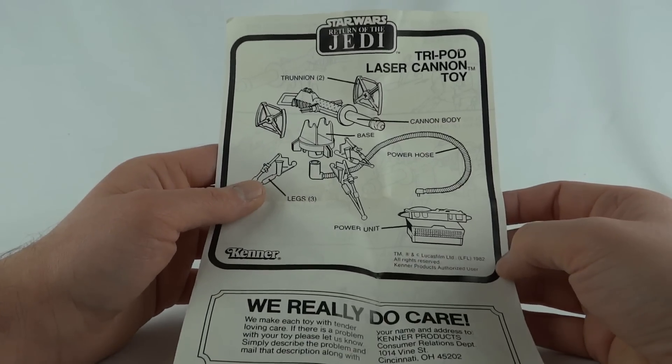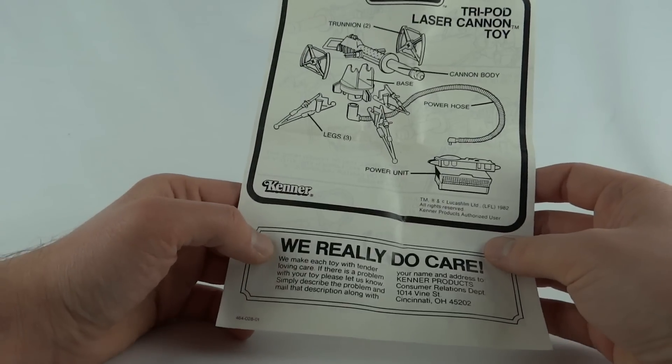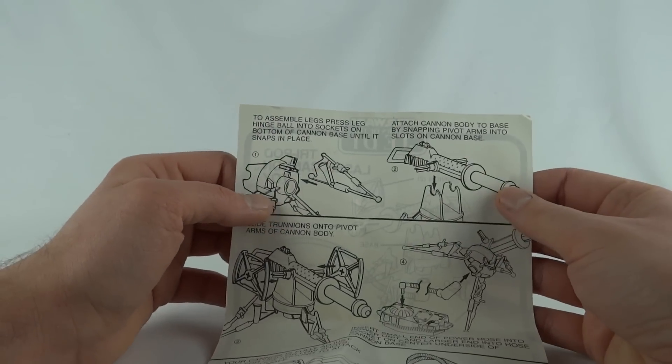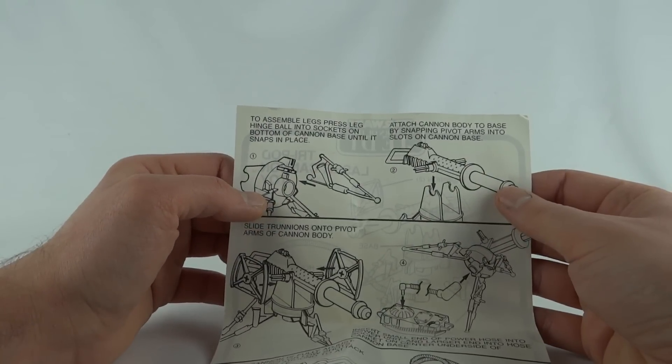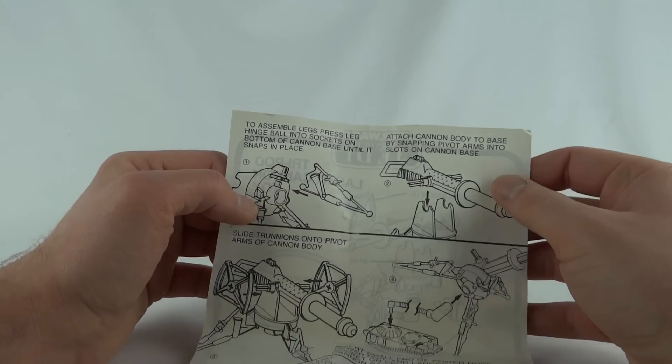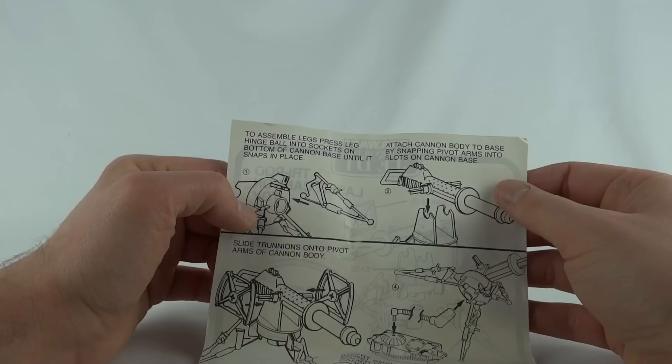On the back, to assemble legs, press leg hinge ball into socket on bottom of cannon base until it snaps into place. Attach cannon body to base by snapping pivot arms into slots on cannon base.